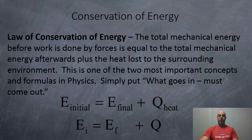Simply put, what goes in must come out. So here are our total initial energy going into a system, is equal to the final energy, useful energy coming out, plus the heat loss to the environment. So Ei equals Ef plus Q. So this, along with F equals ma, these are the two most important formulas in physics.